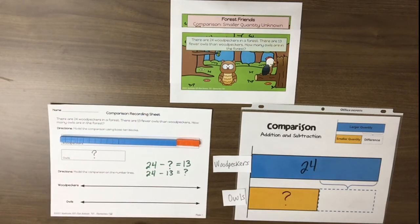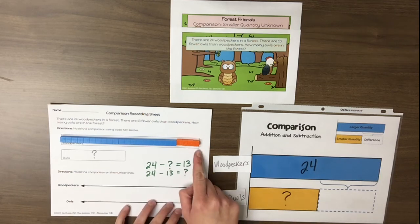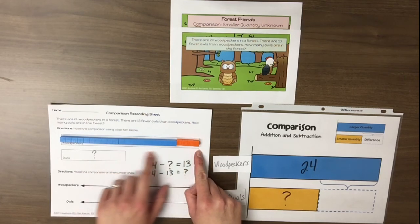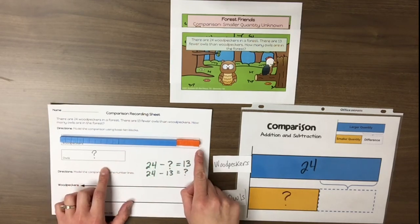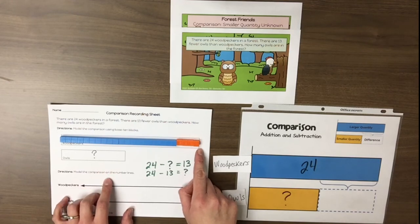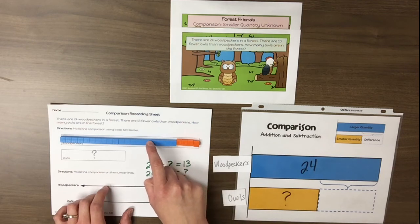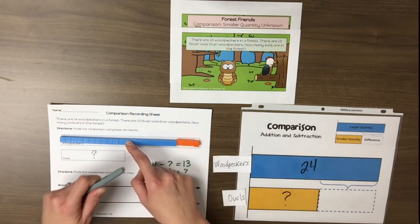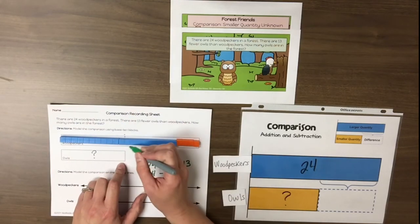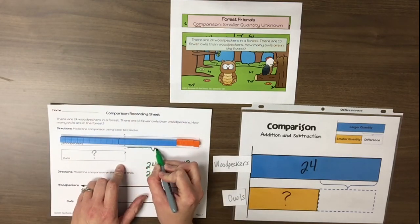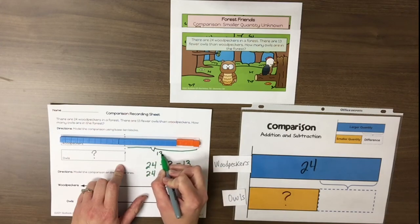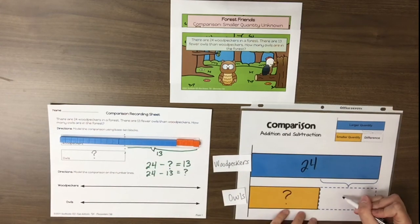Direct students to start at the right side of the base 10 model and count 13 units moving to the left. So we're going to decompose 24 into 13 and the unknown part, starting at the right-hand side and counting back 13 units. After counting back 13, we decompose the difference in our strip diagram — the difference of 13 is represented here.